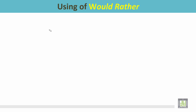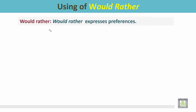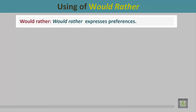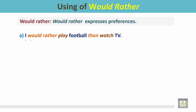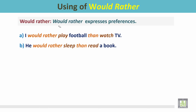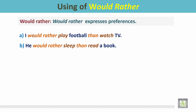Using of 'would rather.' Would rather expresses preferences. For example: I would rather play football than watch TV. In this sentence, I have two choices: play football or watch TV. With 'I would rather,' I prefer to play football. Another example: He would rather sleep than read a book. Between two choices — sleeping and reading a book — he expresses his preference to sleep.